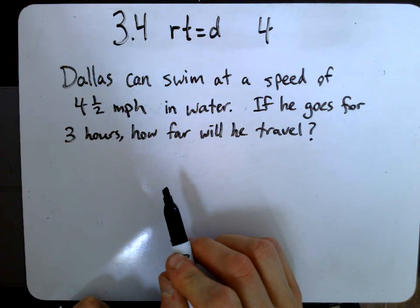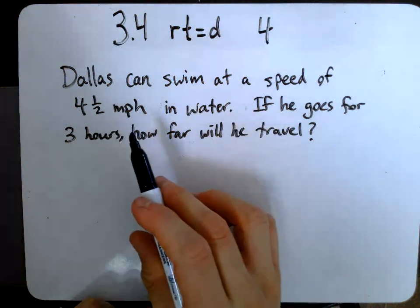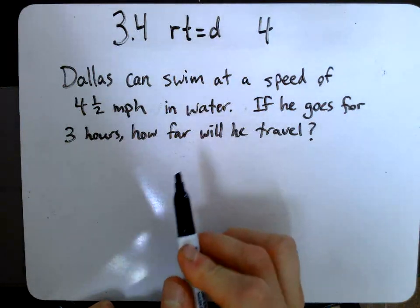Okay, part four. Here's our last practice question. Dallas can swim at a speed of 4.5 miles per hour in water. If he goes for three hours, how far will he travel?